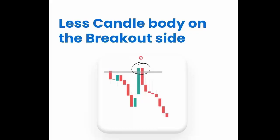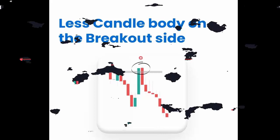The first one is less candle body on the breakout side. If a stock breaks the resistance, check the breakout candle body. If only a small portion is close above the resistance, then there is a chance for breakout failure. I will show you one example.